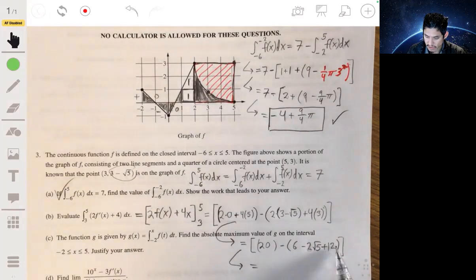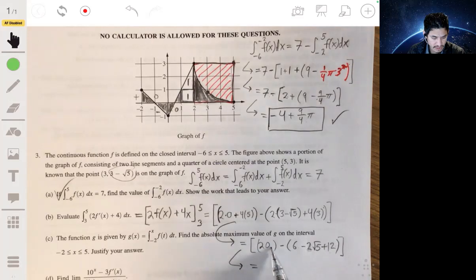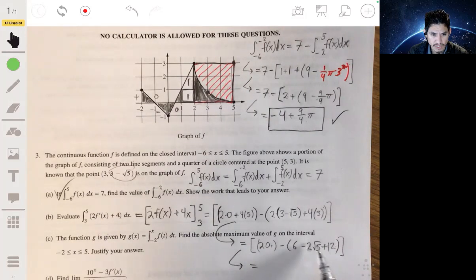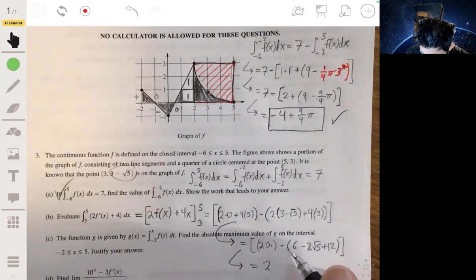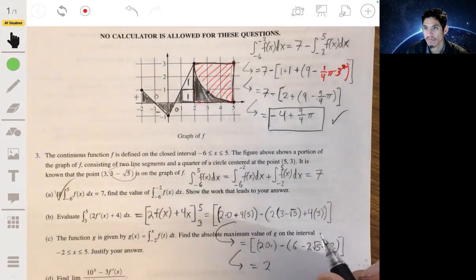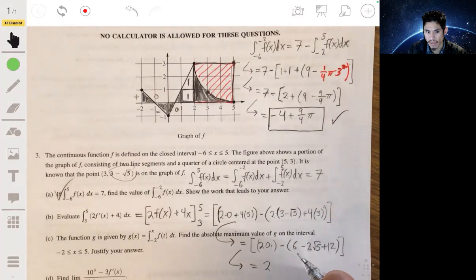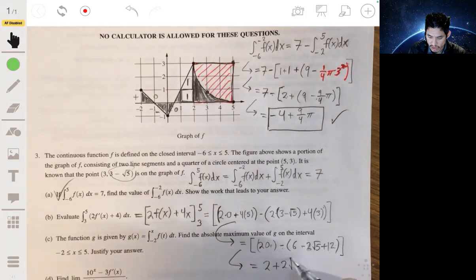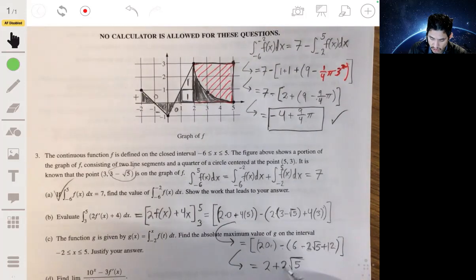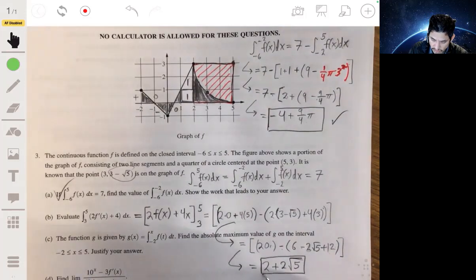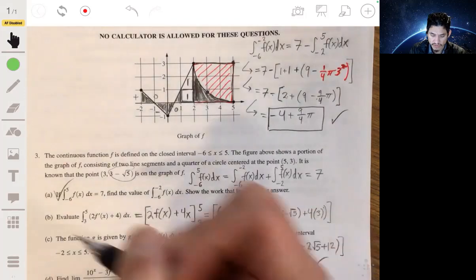And again, we just got to be careful we don't mess up on our algebra. Just taking it down here. This will be 0, 20, minus 6, minus 2√5, plus 12. So you get 18, 20 minus 18. So 20 minus 18, you get 2 plus 2√5. Okay, and there you go. There's your answer for part B.